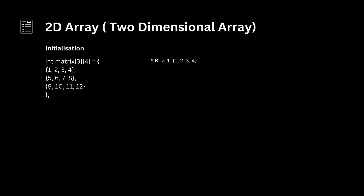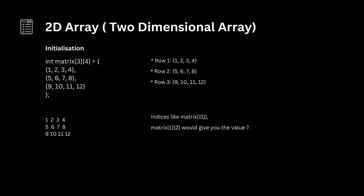The comma-separated values inside each inner set of braces represent the elements of that row. The provided example initializes a 3x4 matrix as follows: Row 1: 1, 2, 3, 4. Row 2: 5, 6, 7, 8. Row 3: 9, 10, 11, 12. You can access individual elements using indices like matrix[i][j]. For example, matrix[1][2] would give you the value 7.